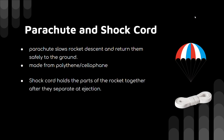The parachute is attached to the body of the rocket with the help of shock cords, which hold the parts of the rocket together after their separated ejection. When the rocket reaches the apogee — the highest point in the flight path — it needs to descend. The nose cone separates from the body tube and the parachute comes out. Both parts are held together with a shock cord attached to the parachute. The shock cord is generally made of elastic cord or braided nylon, which have very high tensile strength.